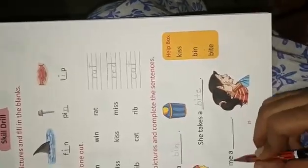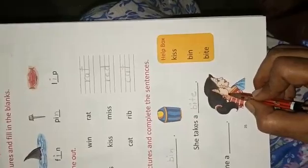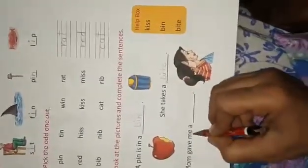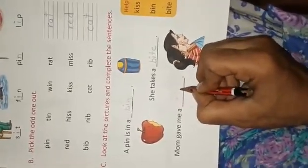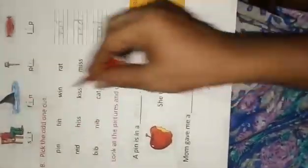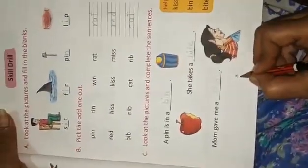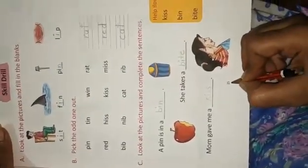Mom gave me a, girl is kissing on her mom's face. So we write here K-I-S-S kiss. Mom gave me a kiss. Spelling of kiss is K-I-S-S kiss. Do this work in your book, page number 25.